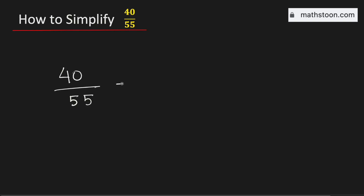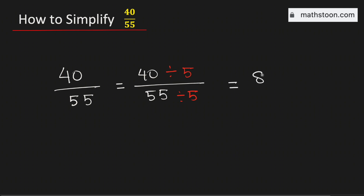In this video let us simplify the fraction 40 over 55 in its simplest form. Both numbers are divisible by 5, so to simplify this fraction we will divide both the numerator and the denominator by 5, and if we do that we will get 8 over 11.